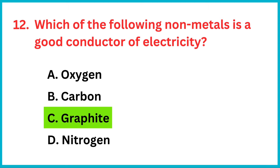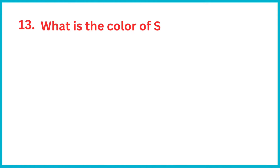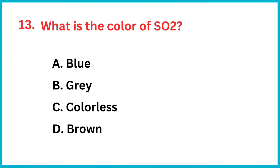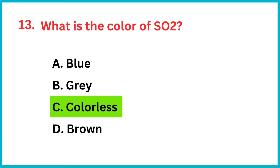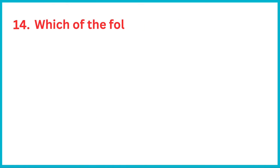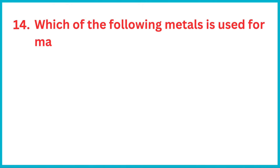Which of the following non-metals is a good conductor of electricity? The correct answer is option C: graphite. What is the color of SO₂? The correct answer is option C: colorless. Which of the following metals is used for making aircraft parts?